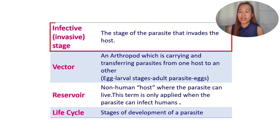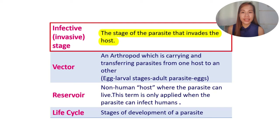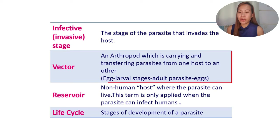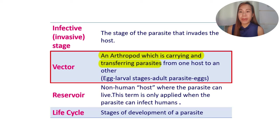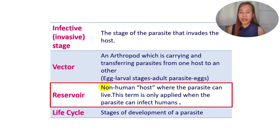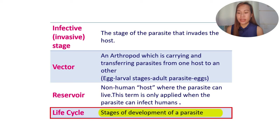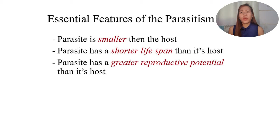There are different stages in the life cycle of a parasite. The infective stage, also known as the invasive stage, is the stage that invades the host. A vector is an arthropod that carries and transfers parasites from one host to another. A reservoir refers to non-human hosts where the parasite can live — applicable when the parasite can infect humans. These terms are very important to remember.